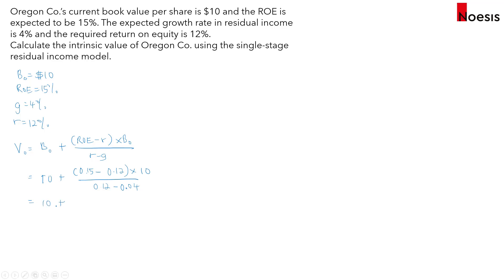The second term equals $3.75, which represents the present value of all future residual income from year one onwards. Therefore, the intrinsic value of Oregon Call is $13.75.